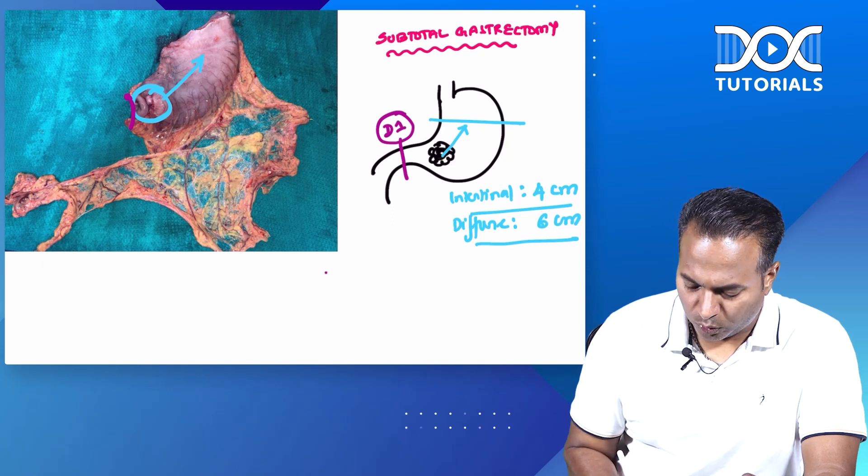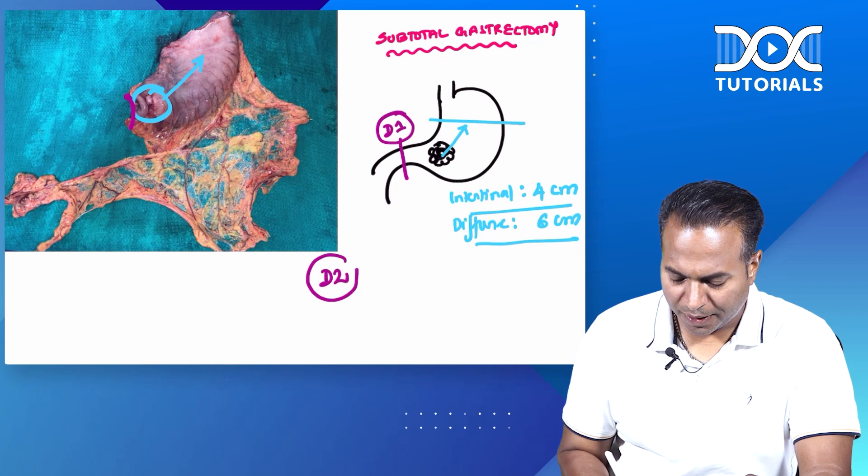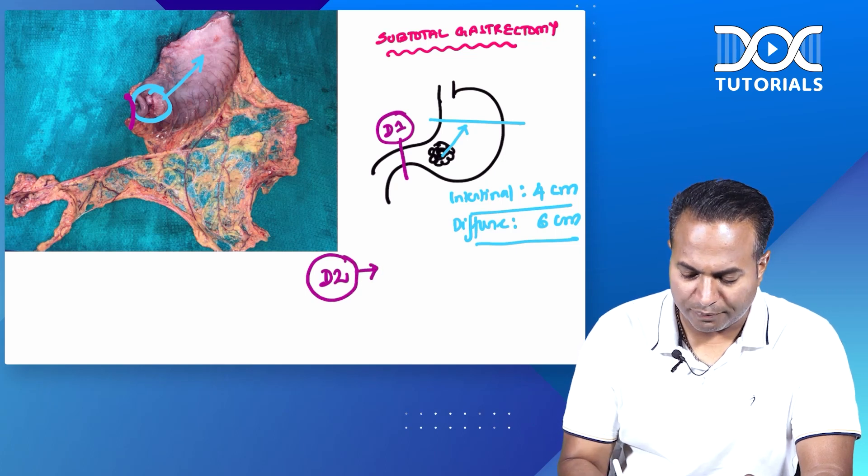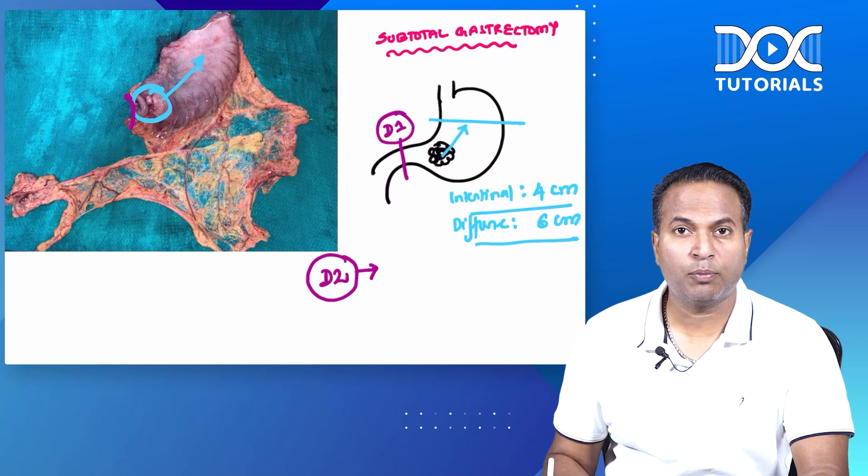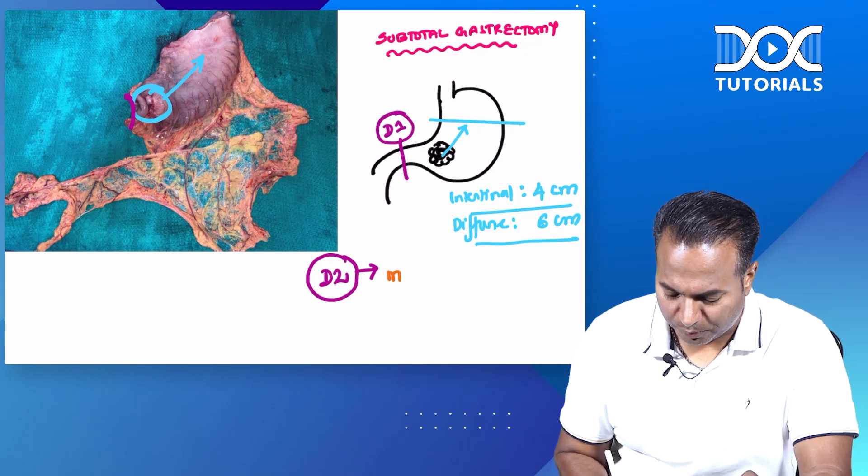In D2 subtotal radical gastectomy, D2 means removal of lymph nodes. How many lymph nodes will you remove in D2 gastectomy? The minimum number of nodes that should be removed is...